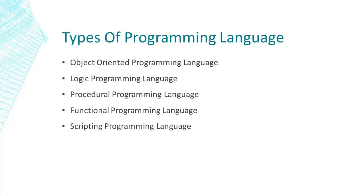Now we shall see the types of programming languages. They are: object-oriented programming language, logic programming language, procedural programming language, functional programming language, and scripting programming language. Now we shall see how they differ.